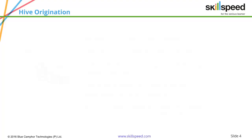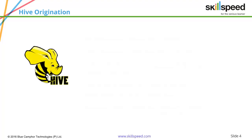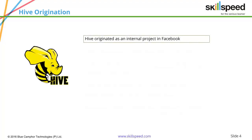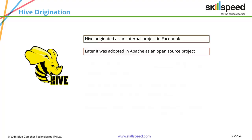Hive was originated as an internal project at Facebook. Facebook was the company that invented Hive, and later it was adopted by Apache as an open source project.